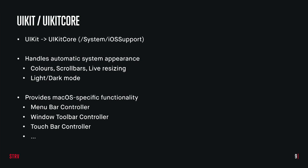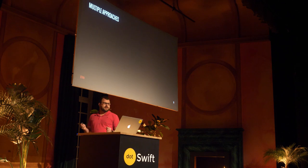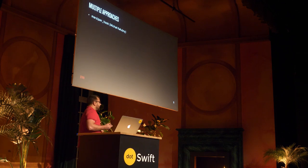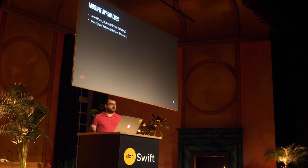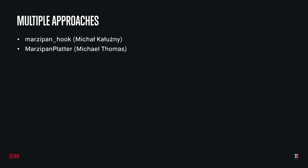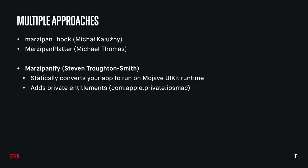And it provides macOS-specific functionality like menu bar controller, window toolbar control, and even touch bar control. Now, how to make this work for yourself. There have been multiple approaches historically: the first and second were Marzipan Hook and Marzipan Platter — pretty cool things, these people are heroes, but a little outdated right now. The one I like to use these days is called Marzipanify by Steve Stroughton-Smith. What it does is, well, it does magic — it converts everything to run with UIKit on macOS, with the right entitlements, et cetera. Let's not go too much into it, but it does magic and it works.